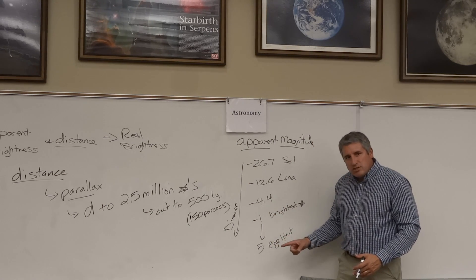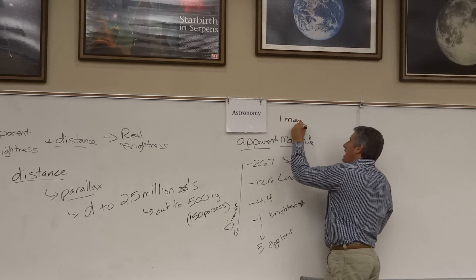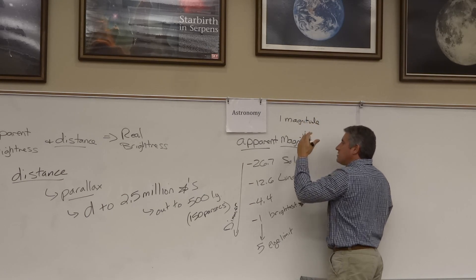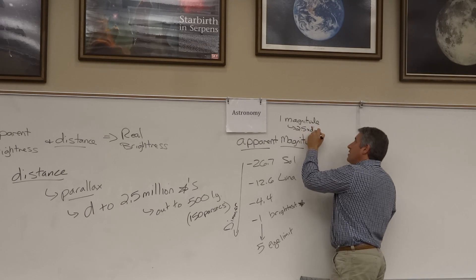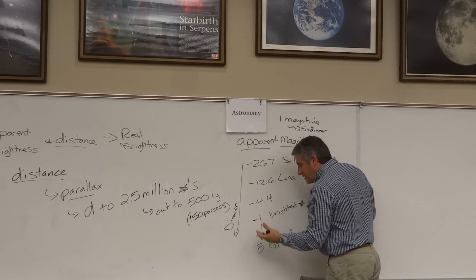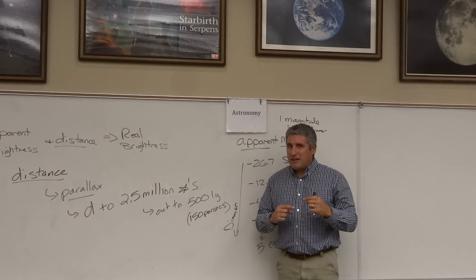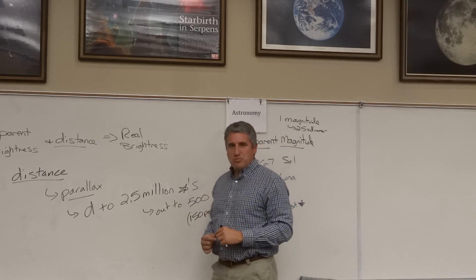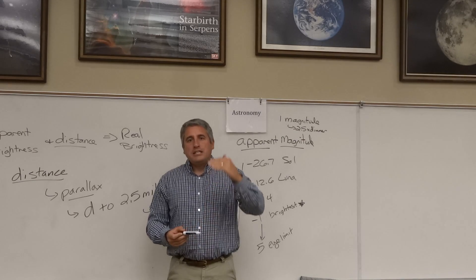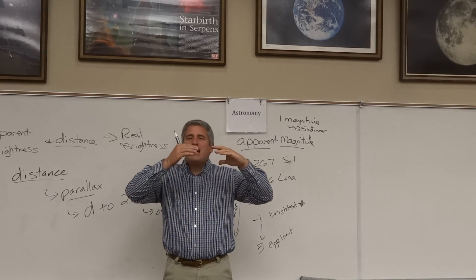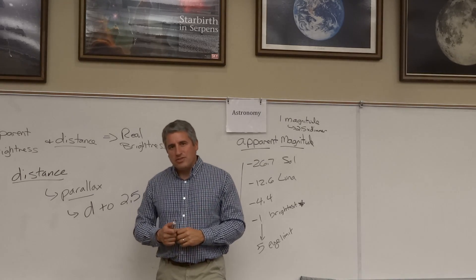Every one magnitude difference is 2.5 times dimmer. So if we go from a magnitude 1 star to a magnitude 2 star, it is 2.5 times dimmer. What if we went from a magnitude 1 to a magnitude 3 star? It's not 2.5 plus 2.5 — it's 2.5 times 2.5. The magnitude scale is multiplicative. A difference of 5 magnitudes represents 2.5 to the 5th times dimmer or brighter, depending on whether you're moving up or down the scale.